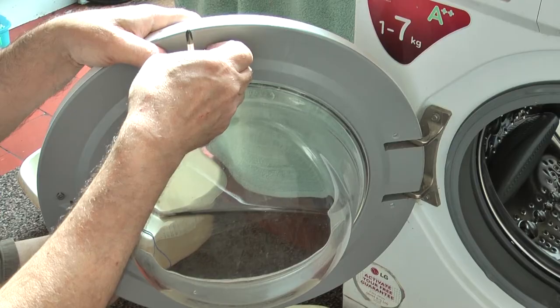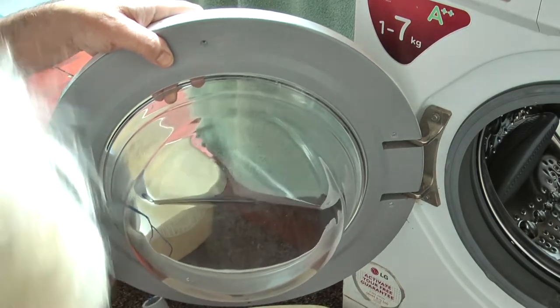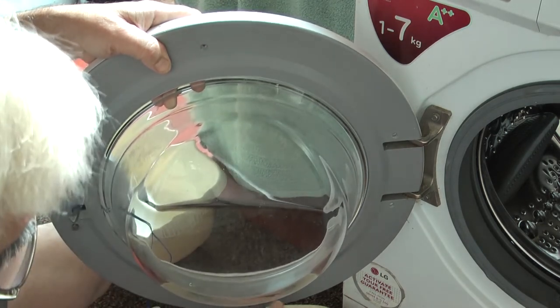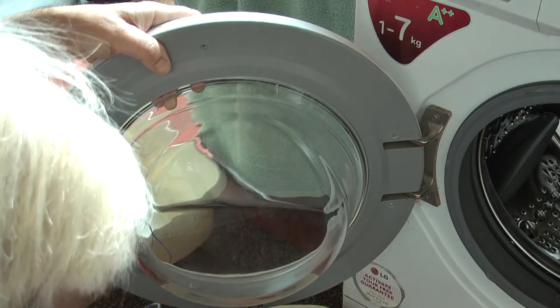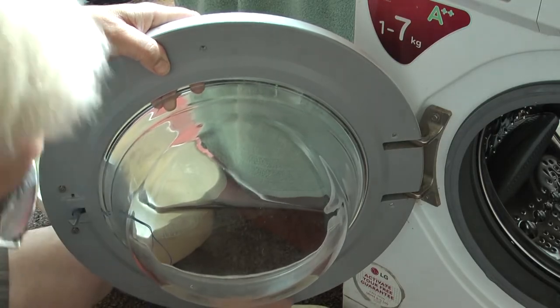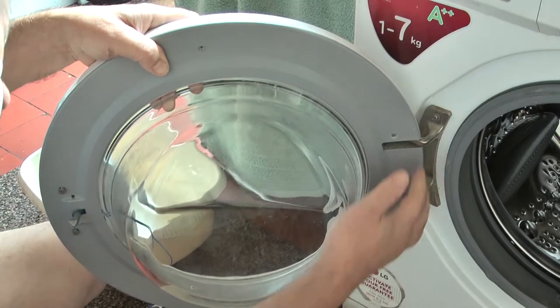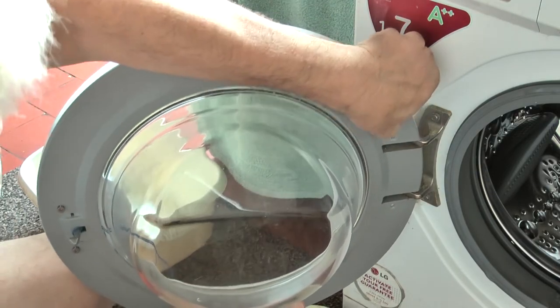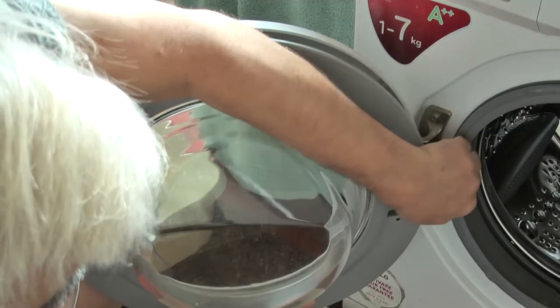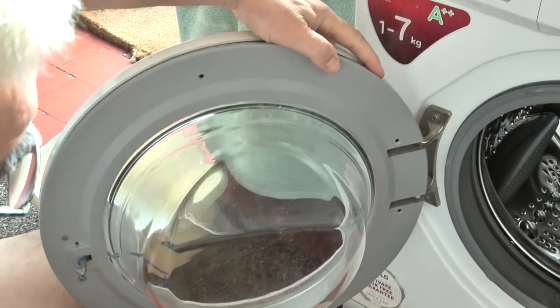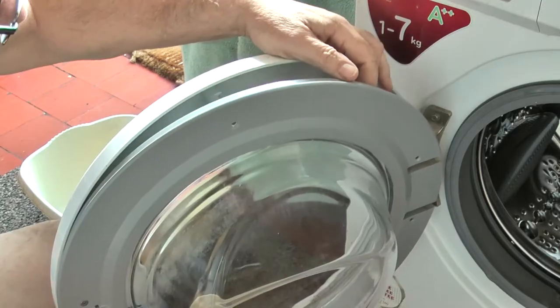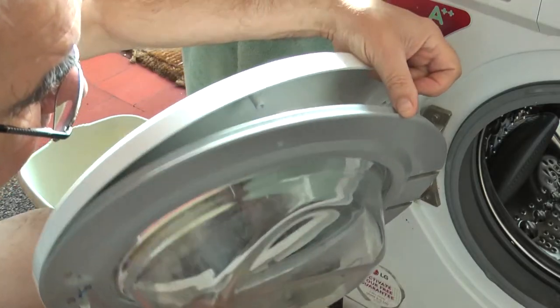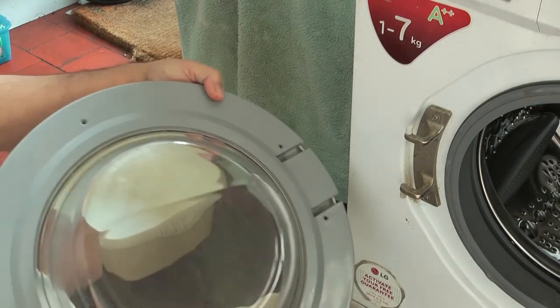One thing we don't want to drop when it all comes loose is the glass, and it is relatively heavy. Now I've taken out all those screws. I've got two in at the front. I'm prising that away gently, and with a bit of luck it should come out. There we go, door off.